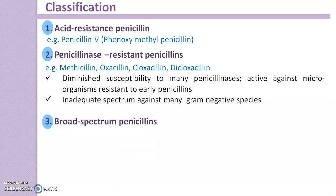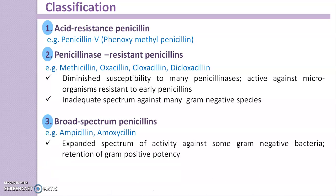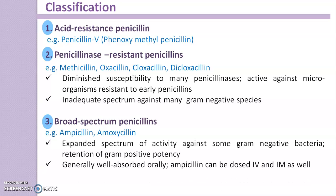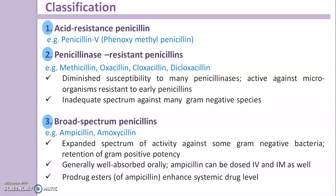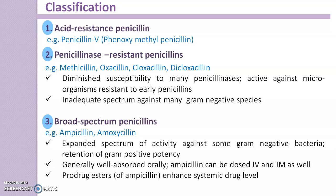The next class is broad-spectrum penicillins. Examples are ampicillin and amoxicillin. These broad-spectrum penicillins have an expanded spectrum of activity against some gram-negative bacteria, with retention of gram-positive potency. Generally they are well-absorbed when given orally. Ampicillin can also be dosed by intravenous as well as intramuscular routes. The prodrug esters of ampicillin enhance systemic drug levels.